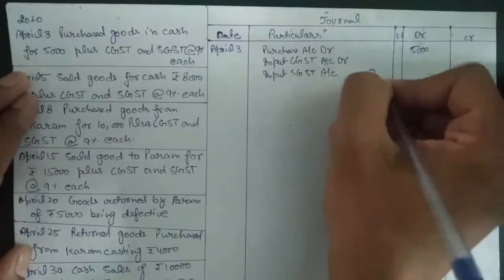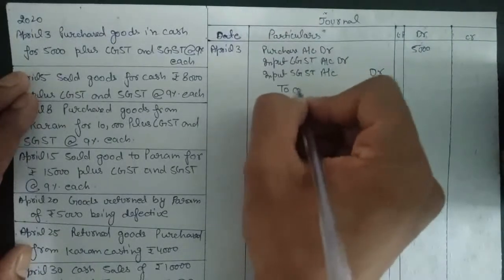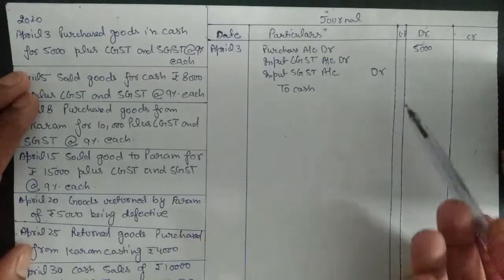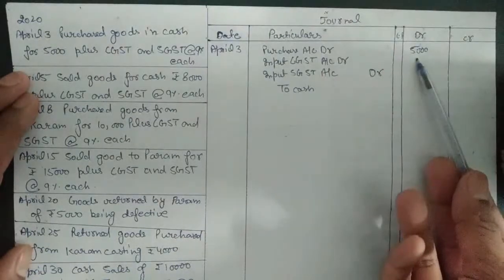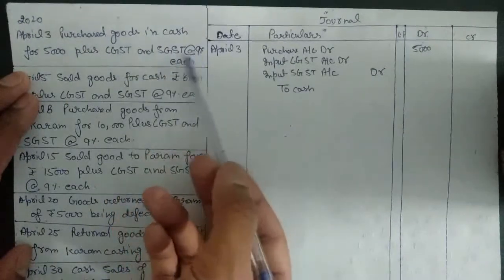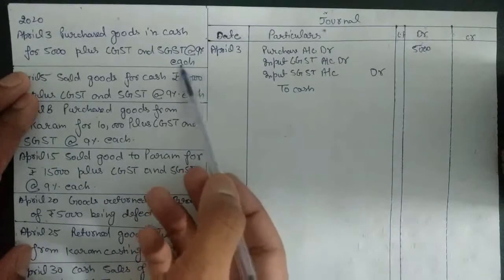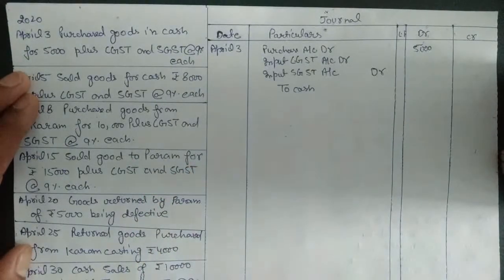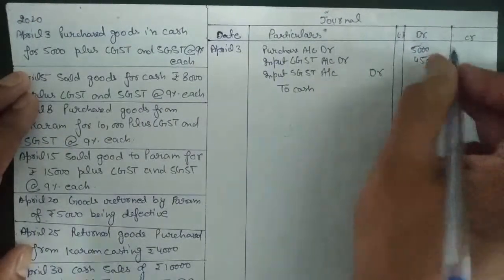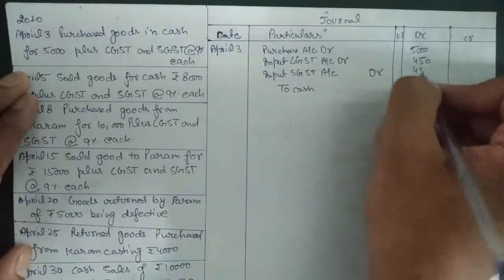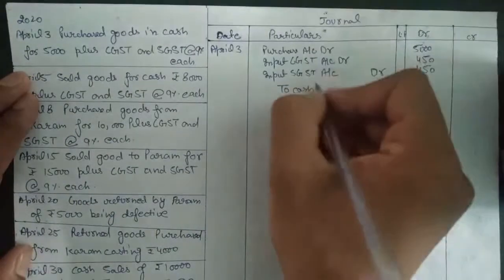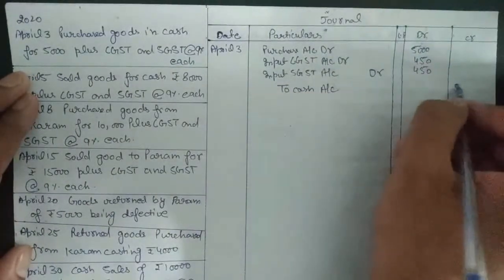We purchased goods worth ₹5,000. We need to pay 9% GST to the central government and 9% GST to the state government. So 9% of ₹5,000 is ₹450, which goes to the central government, and ₹450 goes to the state government. The total amount we need to pay to the seller is ₹5,900.